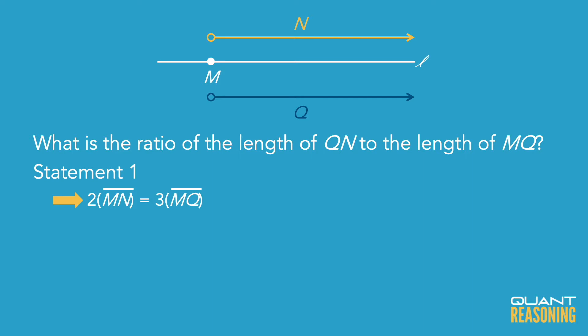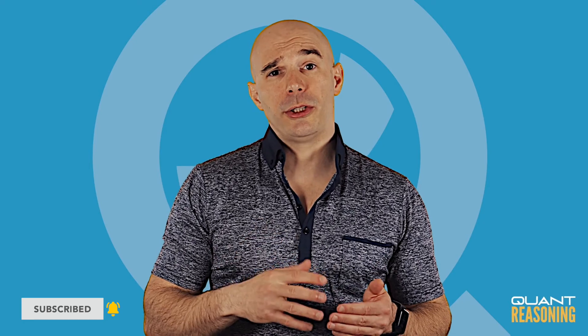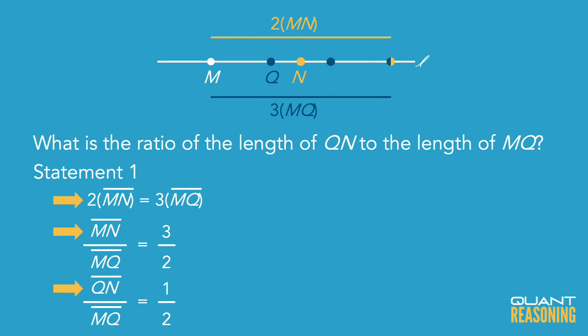Now we can use the ratio that Statement 1 provided. We know MN is the bigger of the two. Taking the numbers from that sentence: MN to MQ is 3 to 2. You could get there algebraically: 2·MN = 3·MQ, divide both sides by MQ and by 2, giving MN:MQ = 3:2. QN is the difference between those two — if you have 3 ratio units for one segment and 2 ratio units for part of that segment, the remaining part must be 1 ratio unit. So QN to MQ is 1 to 2, and therefore the correct answer is A.